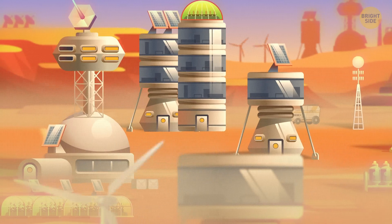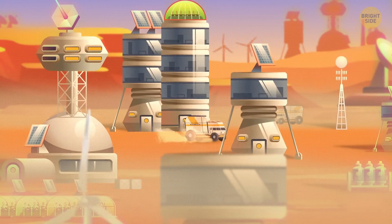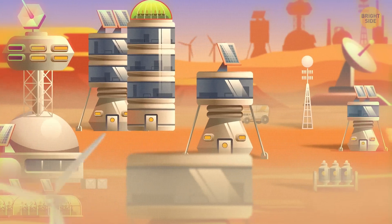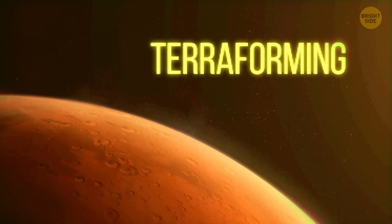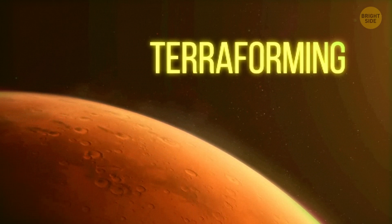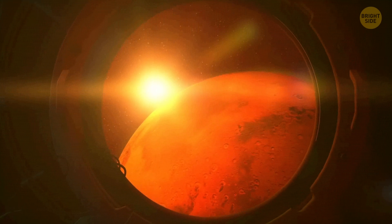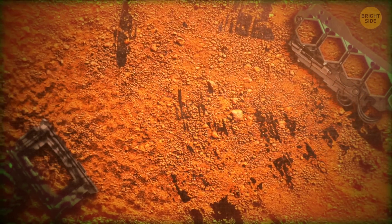Now that there's a whole city on the planet's surface, it's time to turn Mars into something more comfortable, resembling Earth. This is called terraforming. We need to increase the pressure in the atmosphere so that water can exist here not only as a vapor or ice, but also in liquid form.